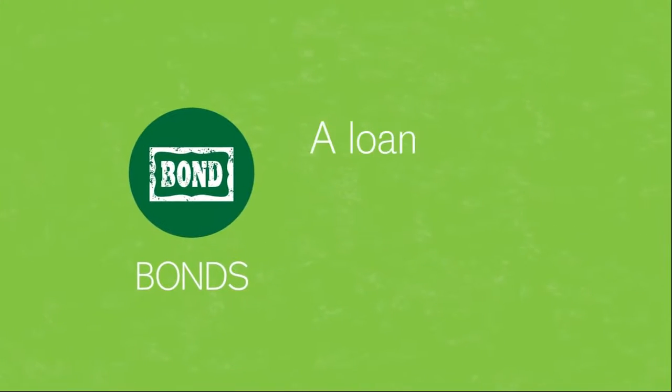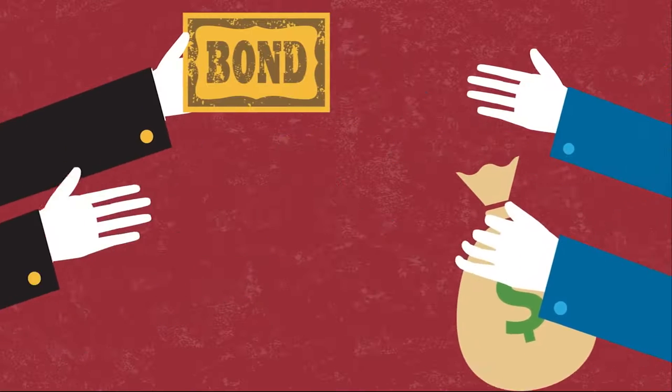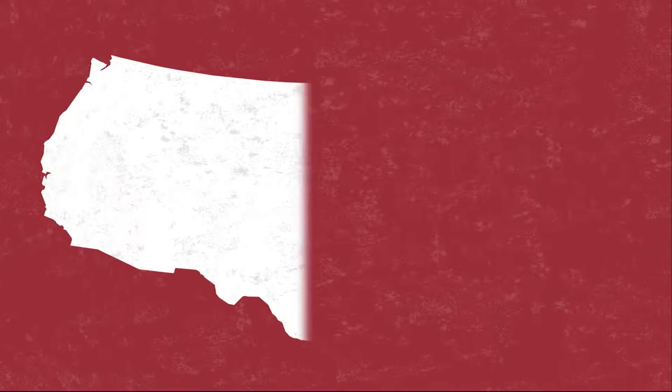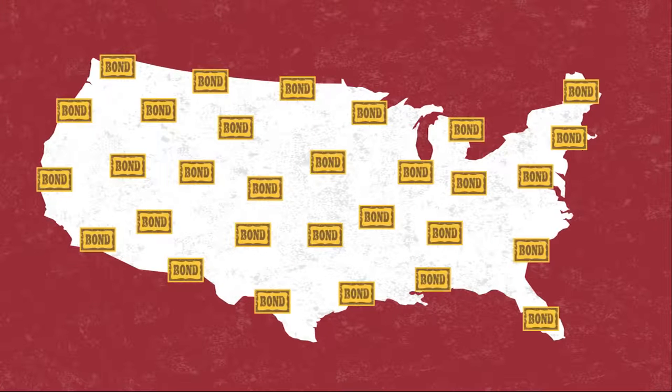Bonds are just a loan to a company or government. They borrow by selling a bond, which is simply a promise to repay the buyer in a fixed number of years at a fixed interest rate. When you hear about the US government borrowing money, have you ever wondered who they borrow from? Chances are, it's you, through the investments you make in bonds.